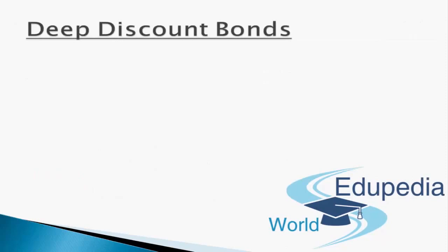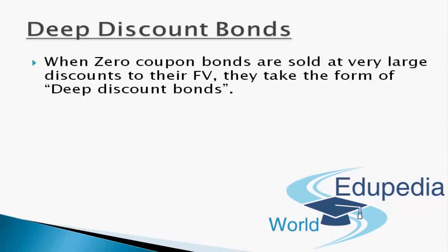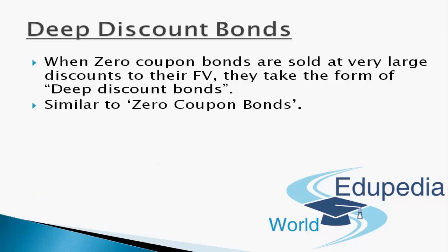Now let's discuss the related topic of deep discount bonds. When zero coupon bonds are sold at a very large discount to their face value, they take the form of deep discount bonds. Similar to any zero coupon bond, there are no interest payments and investors obtain their return only at maturity. The advantage to the issuer is that it does not entail any cash outflow till the time of redemption or maturity date, same as zero coupon bonds.